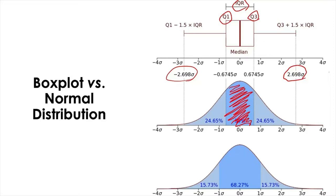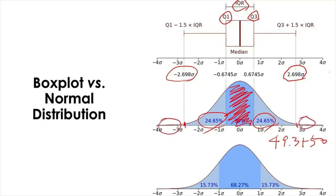Up to those two boundaries, each contains 24.65%. So if we combine these two together, it'll become 49.3%. And 49.3% plus 50 is 99.3%, and the remaining tail ends will only contain 0.7% — so each tail will contain 0.35%.